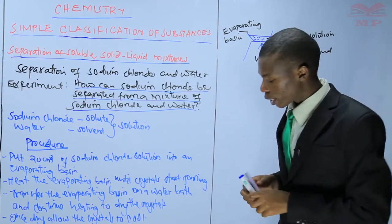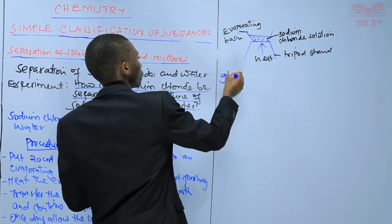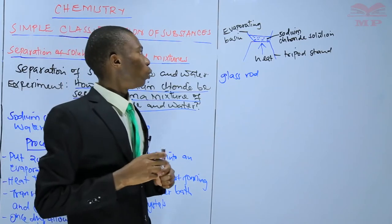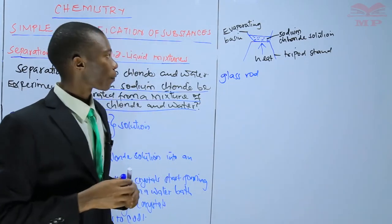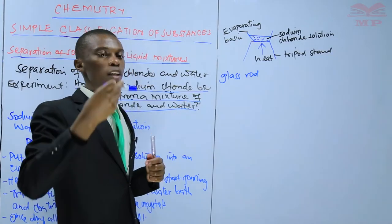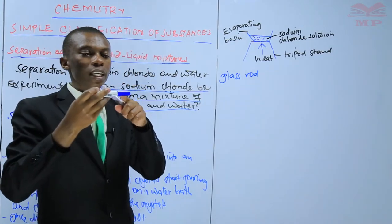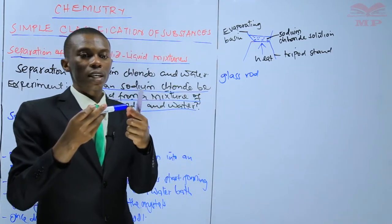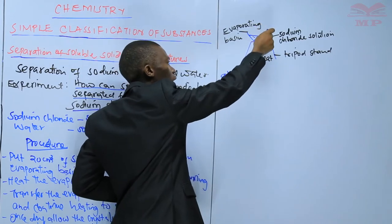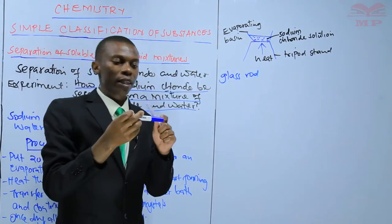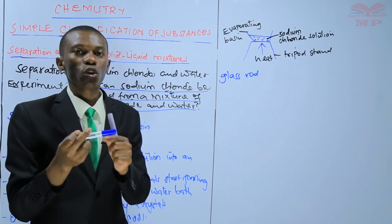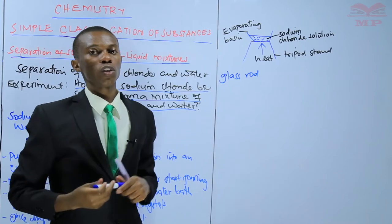To detect crystal formation, you can use a glass rod. The glass rod will help you know whether the crystals have started forming. If you dip the glass rod inside the solution as it is being heated and then hold it up in the air, you will be able to see some crystals of sodium chloride on the surface of the glass rod. At that point, you know the crystals have started forming.